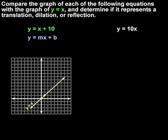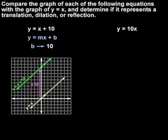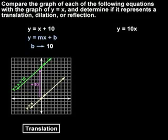So we can see that the only difference between y equals x and y equals x plus 10 is that y equals x plus 10 has a b, or y-intercept, of 10. In other words, to graph y equals x plus 10, we take the parent graph of y equals x and shift it 10 units up. This type of transformation, where the parent graph of y equals x is shifted up or down, is called a translation.